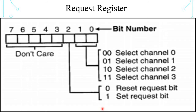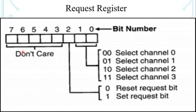The request register is a non-maskable register used to request DMA transfer via software. Each bit is set or reset under program control. The first two bits select the channel: 00 channel 0, 01 channel 1, 10 channel 2, 11 channel 3. Bit 2: value 0 resets the DMA request, value 1 sets the DMA request. The remaining bits D3 to D7 are don't care and are not used in the 8237.